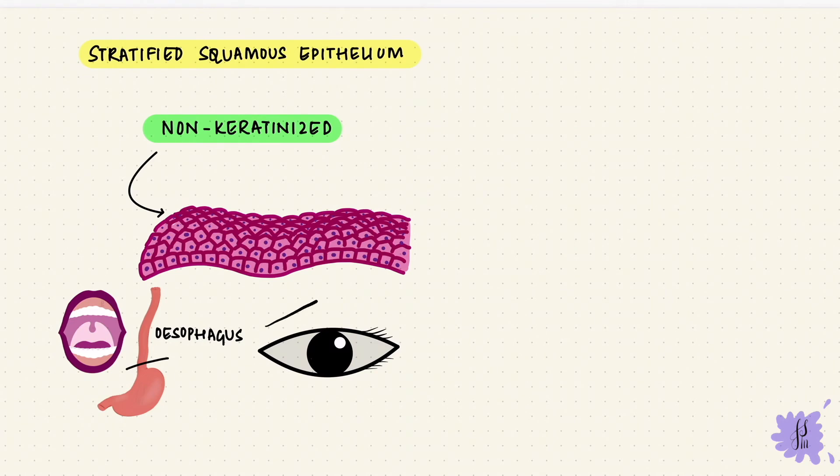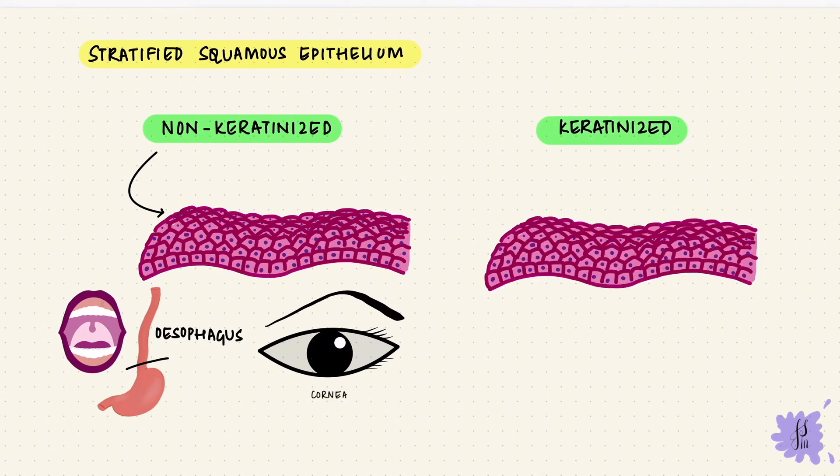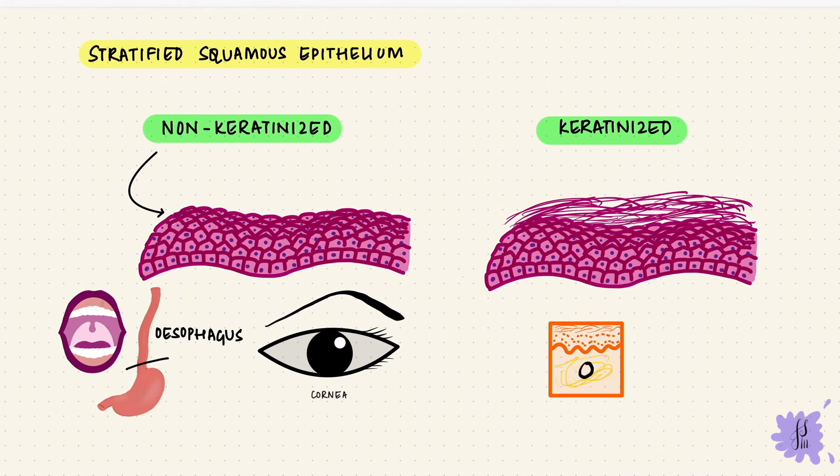In keratinized stratified squamous epithelium, the layer on top is dead cells with no nuclei and they have keratin. So this is how skin is. Skin is keratinized stratified squamous epithelium.